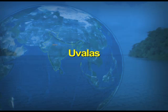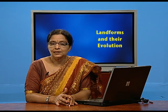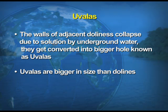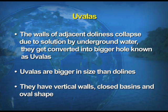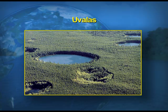Another feature is uvalas. When the walls of adjacent dolines collapse — again due to solution by underground water — they get converted into bigger holes known as uvalas. Like dolines but bigger in size, uvalas have vertical walls, closed basins, and an oval shape.